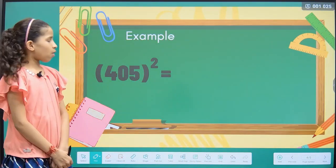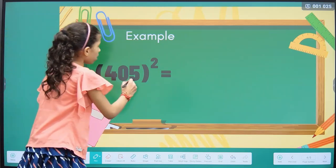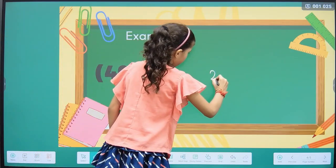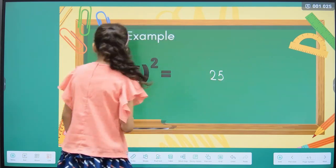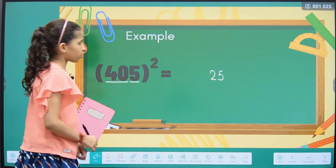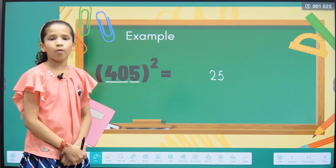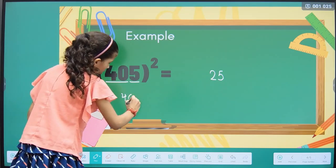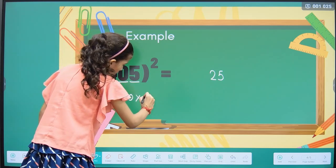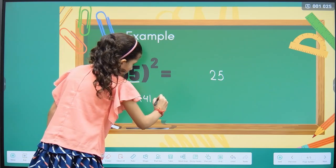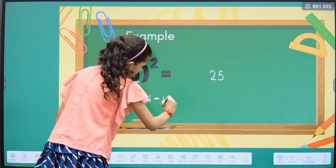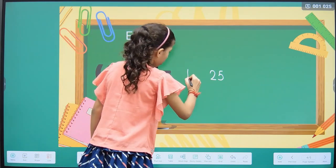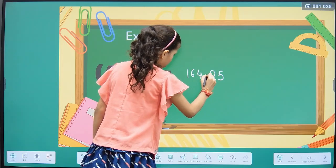The third example is 405. The square of 5 is 25. The rest value is 40. The successive number of 40 is 41. Then we multiply 40 into 41, which equals 1640. The answer is 164025.